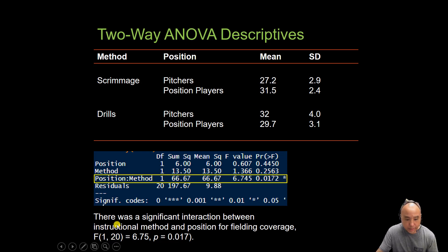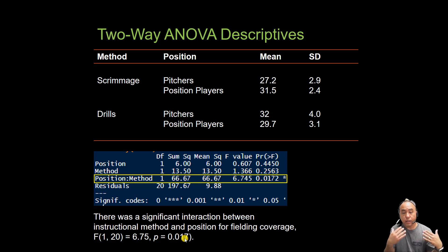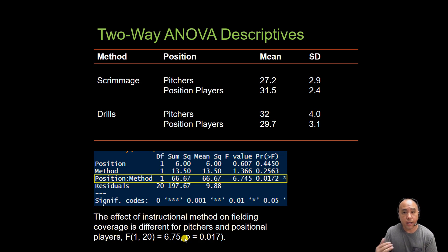In APA format, this is reported as F(1, 20) = 6.75, p < .05 — the F statistic is based on 1 degree of freedom for the interaction and 20 degrees of freedom for the residual error. The probability of observing that F statistic is 1.7%, which is less than 5%. Another way to interpret this result is by saying that the effect of instructional method on fielding coverage differs between pitchers and position players. Because of this significant interaction, we need to do a follow-up test specific to a two-way ANOVA.